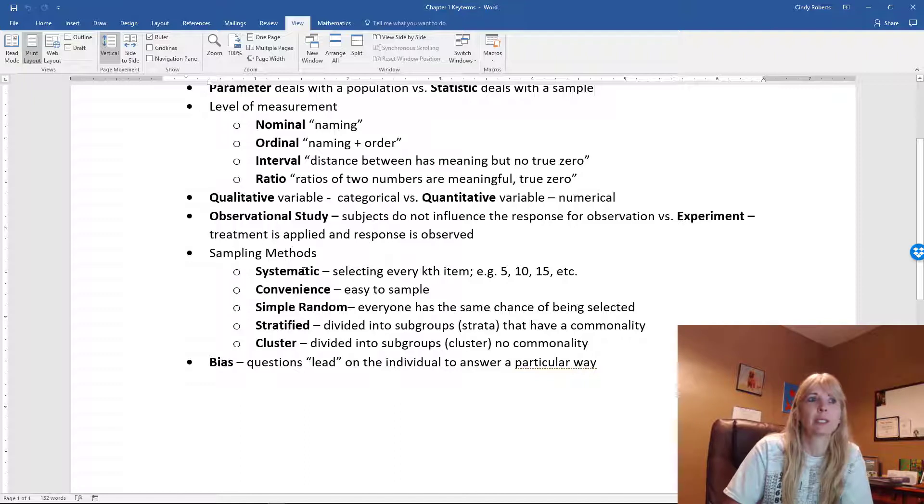Systematic - if I say I'm going to pick every fifth student in this class: 5, 10, 15. So that's just numbering and it didn't have to be five, it can be every third student: three, six, nine, and so on.